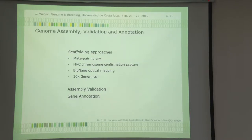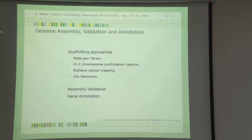When you assemble — and now come scaffolds — you have different scaffolding approaches to get from contigs to the next higher level of assembly. You could make mate-paired libraries, use Hi-C chromosome conformation capture, then BioNano optical mapping, and 10x Genomics. Once you're through all this, you have to validate the assembly, and once validated with no duplicates and no strange things, hopefully you can do a genome annotation.